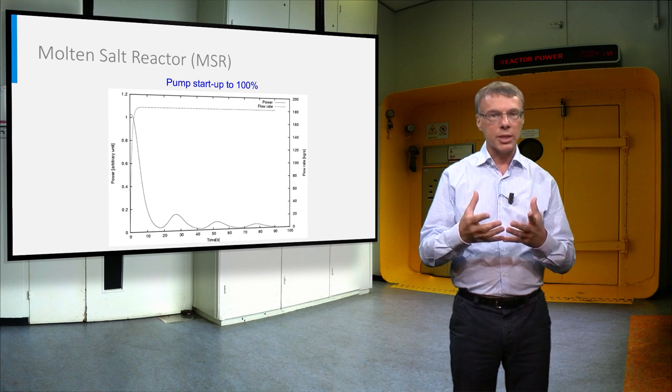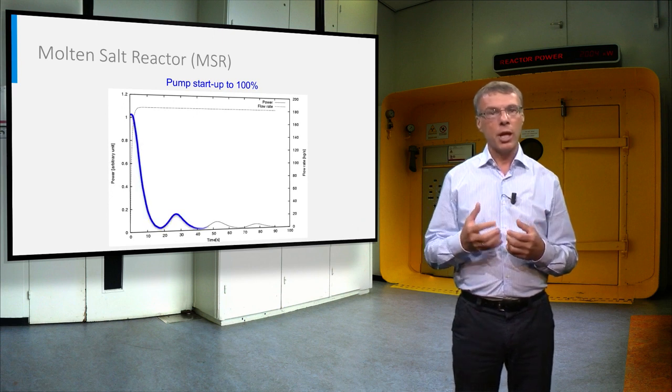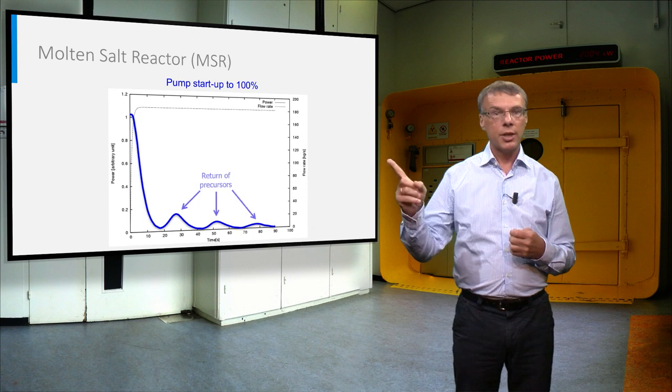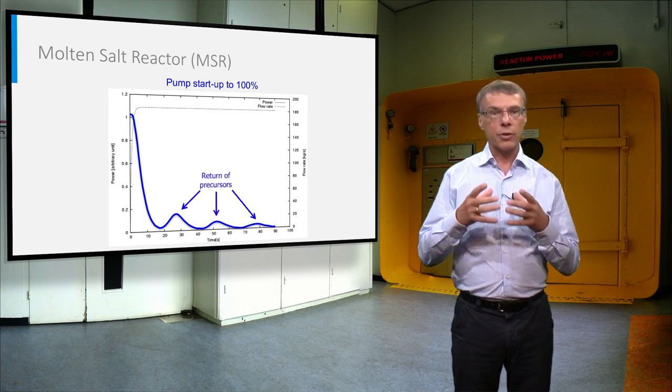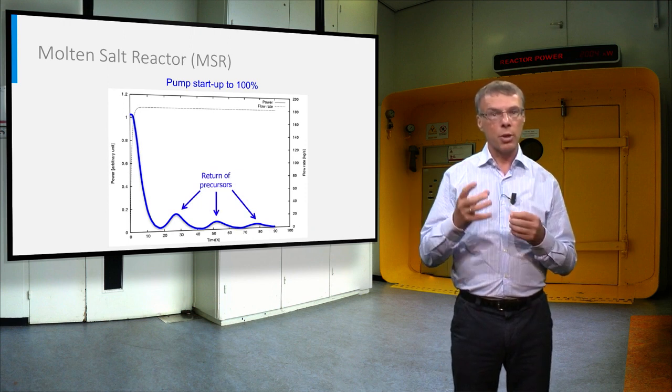Surprisingly, also the opposite, an increase of pump power leads to a decrease of reactor power. This plot shows the reactor power of a critical molten salt reactor when the pumps are turned on.